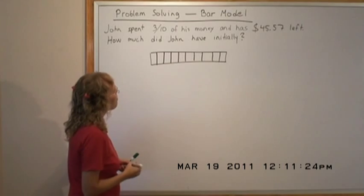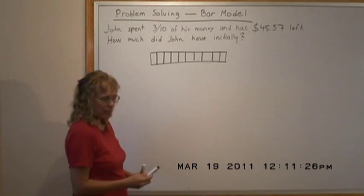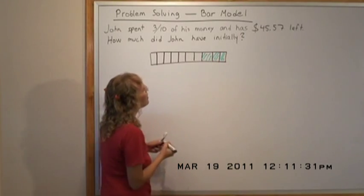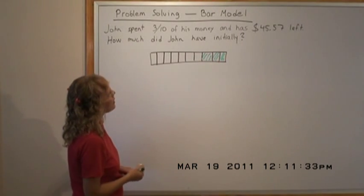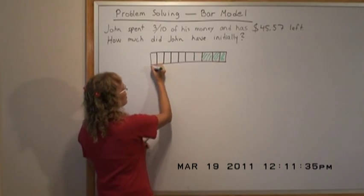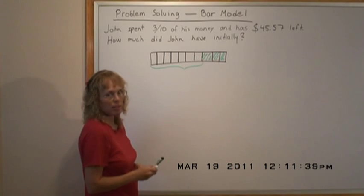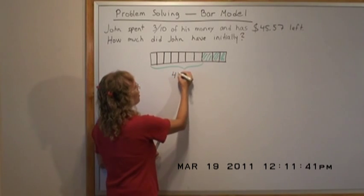Now, John spends three-tenths, so we mark these parts that he spends. Then it says he has $45.57 left, so all this rest is what he has left after spending three-tenths, and we mark that here.